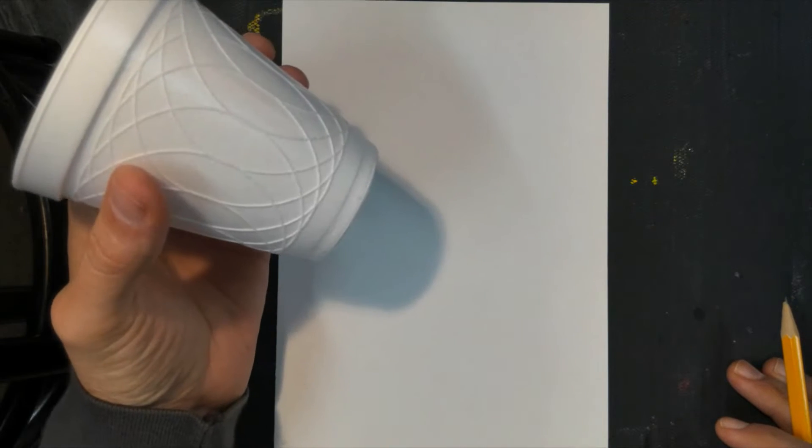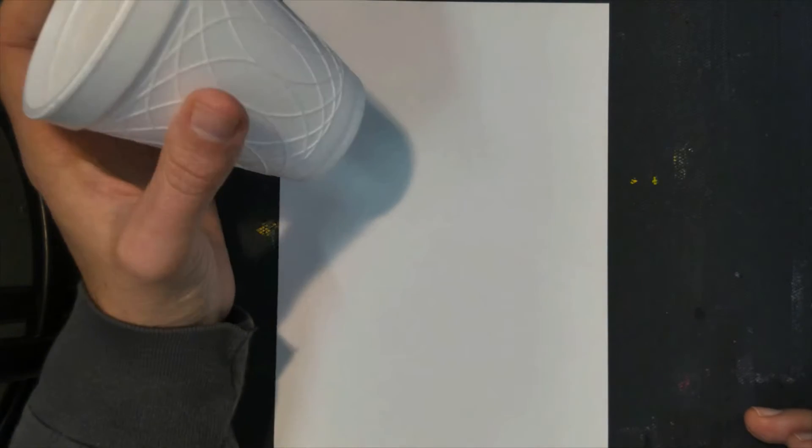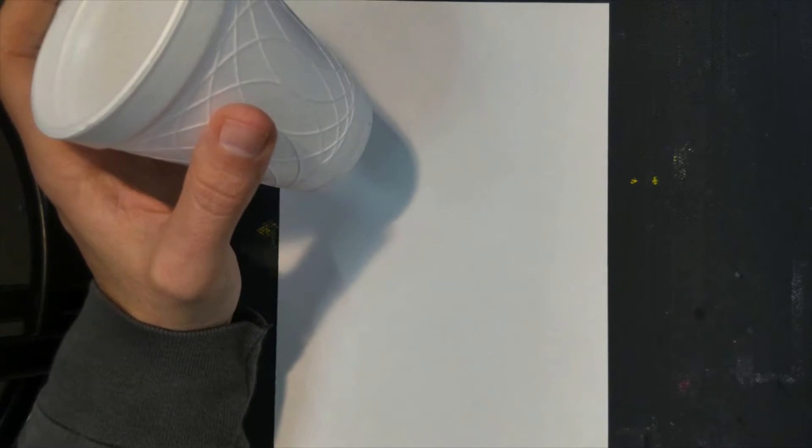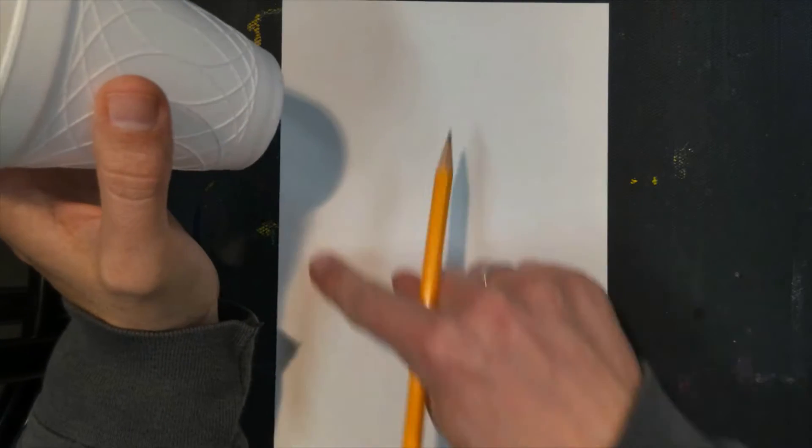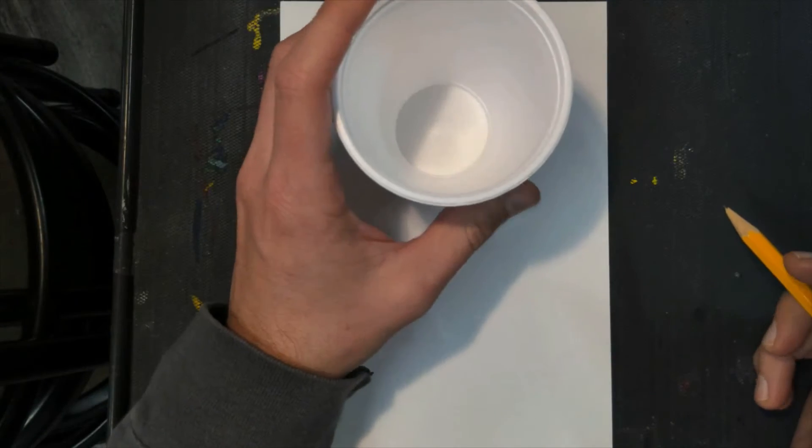All right now check this out. You're going to need some kind of a cup or a circle template and you're going to draw six circles in a circle pattern. So in a circle pattern you're going to have one, two, three, four, five, six circles like this.